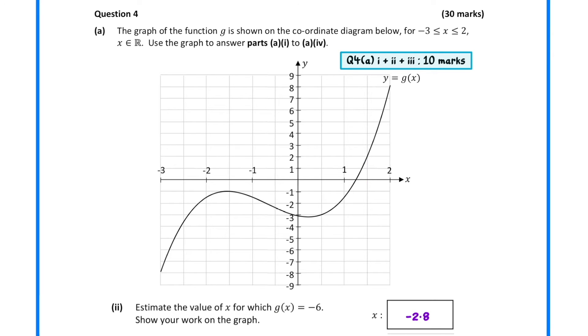In part 2, we must estimate the value of x for which g equals minus 6. Here we draw a horizontal line at minus 6, and then draw a vertical line where it meets the curve. The x value here is approximately minus 2.8.